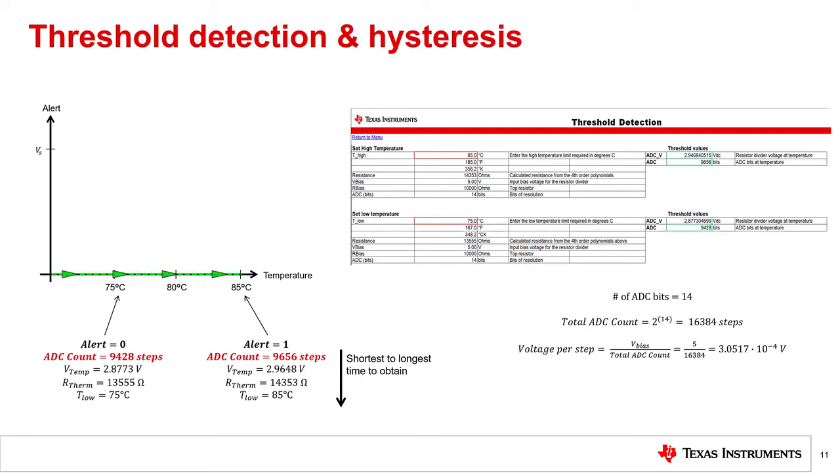As temperature rises, the system does not take any action to cool down. But once the raw ADC count is greater than or equal to 9,656, then the fan turns on. The fan stays on until the raw ADC count is less than or equal to 9,428, and once it reaches that value, the fan turns off. This is a simple threshold detection method similar to how a thermostat works. Not many manufacturers specify these values, but they are pre-calculated for you in TI's thermistor design tool.